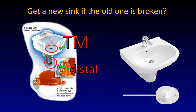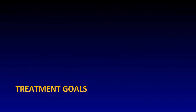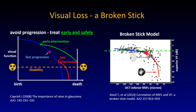So what do you do — get a new sink if the old one is broken? That's a practical approach. One would just replace the pipe, and one way of doing this is by implanting a glaucoma drainage device — putting in a new pipe, if you will.